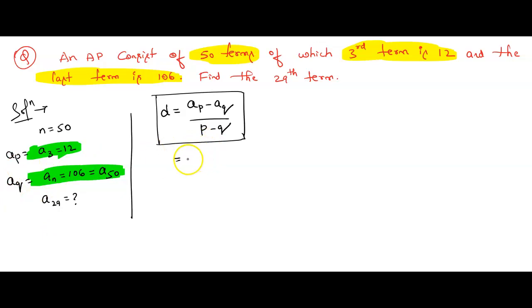So what is the value of AP? That is A₃, what is the value? 12 minus AQ, AQ is A₅₀, A₅₀ is 106 by P. In place of P, what is there? 3. Can you see this? In place of P, we have 3. In place of Q, we have 50.